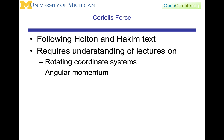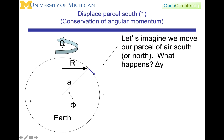We're going to start from this figure, where we have a spherical Earth rotating around the polar axis with an angular velocity of omega. We're going to consider a particular latitude phi. The Earth's radius is a, and the radius around the axis of rotation is going to be a cosine of latitude.